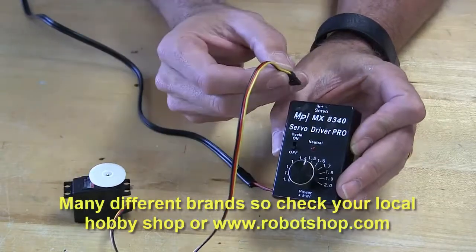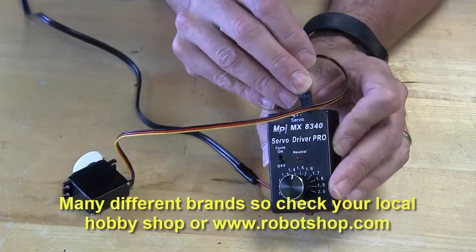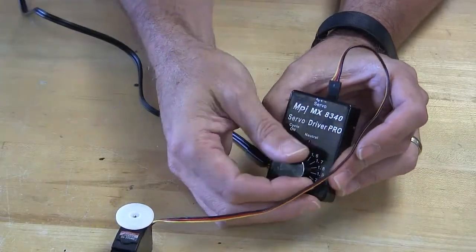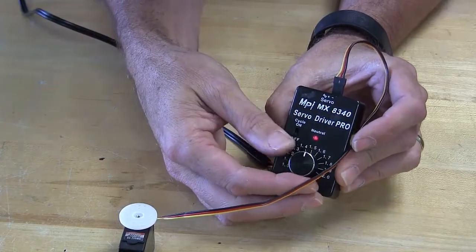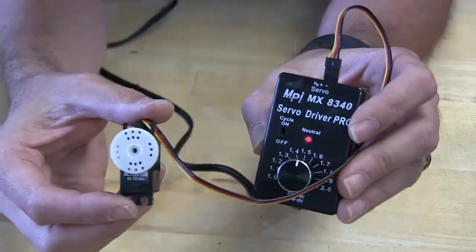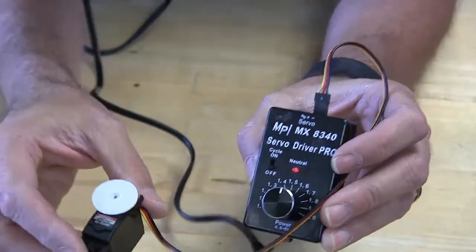If you plug in your servo to this device, you can adjust the servo back and forth. To center the servo, just make sure that red light is on. That's called neutral. When that red light is on, your servo is centered. That's how you do it with hardware.